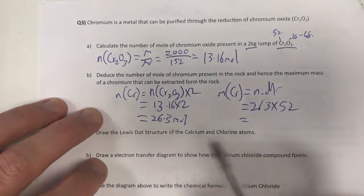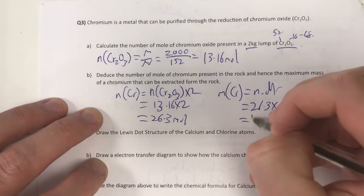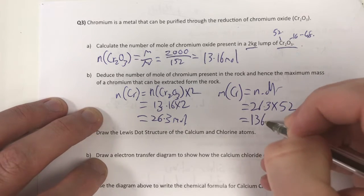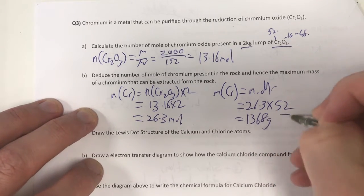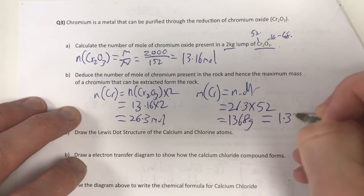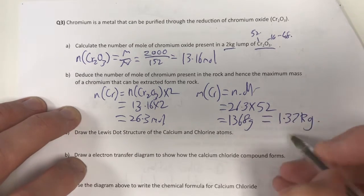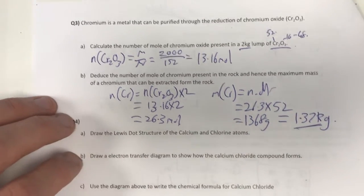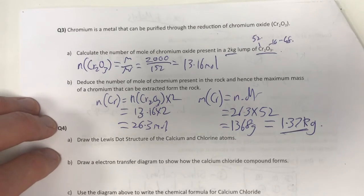I don't retype my things in there. And it's going to be 1,368 grams, which equals 1.37 kilograms. And therefore, I've got my mass of chromium that can be extracted from my rock.